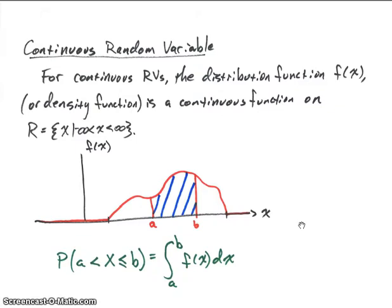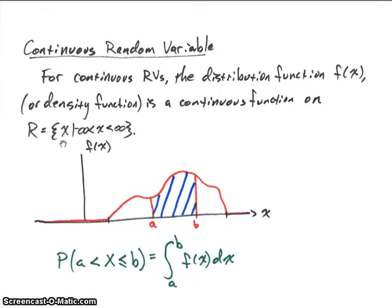Let's first look at what a continuous random variable is. For a continuous random variable, we're going to have a density function f of x. With a discrete random variable, we call it a probability distribution function — we can use those interchangeably. This function is a continuous function on this sample space, or range, with x going from minus infinity to infinity. The discrete random variable was only valid at a finite countable number of points, whereas the continuous random variable is valid over an uncountably infinite number of points, and that's what makes it a continuous random variable.